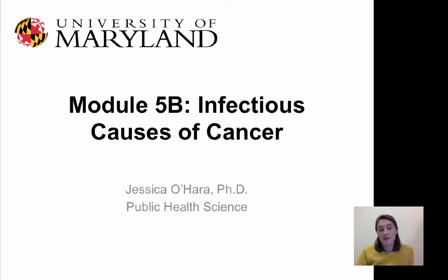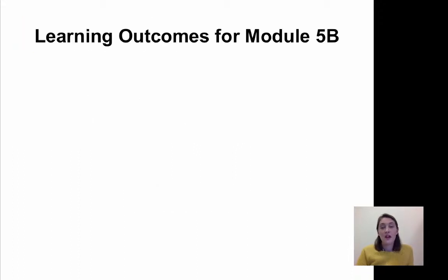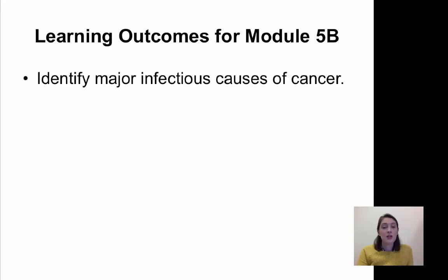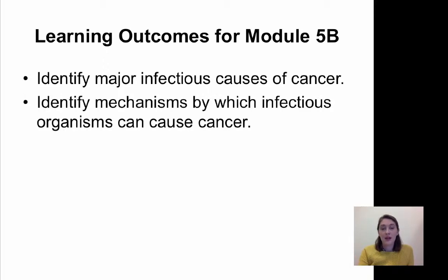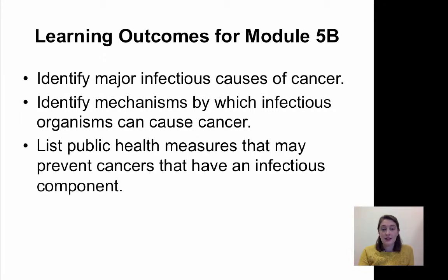We're going to continue now with Module 5. This is Module 5B, and we're going to look at infectious causes of cancer. The learning outcomes for this module are: after watching this lecture and the second lecture that follows, you should be able to identify major infectious causes of cancer, identify mechanisms by which infectious organisms can cause cancer, and list and understand public health measures that may prevent cancers with an infectious component.